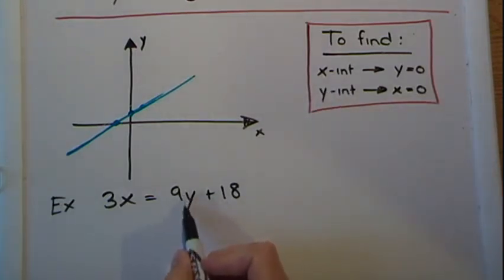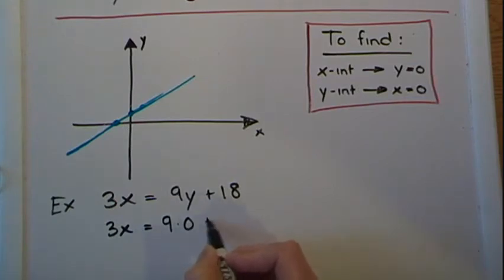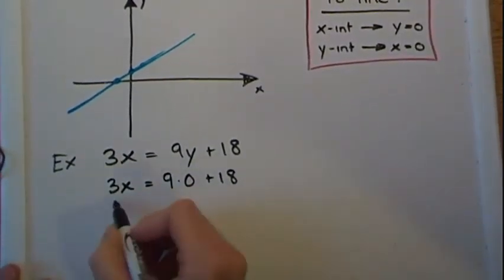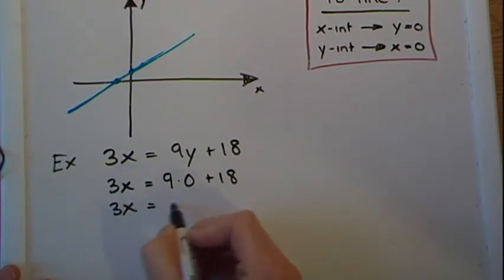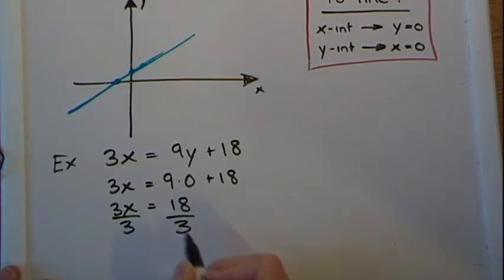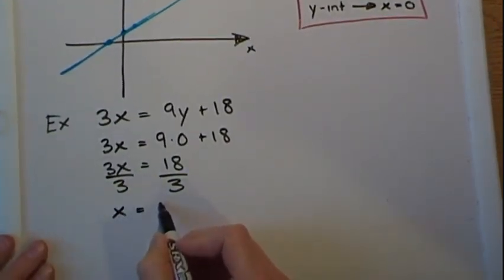Let's replace this y by zero. So we go 3x equals 9 times zero plus 18. So we're going to have 3x equals 18 divided by 3 divided by 3. Our x is going to be equal to 6.